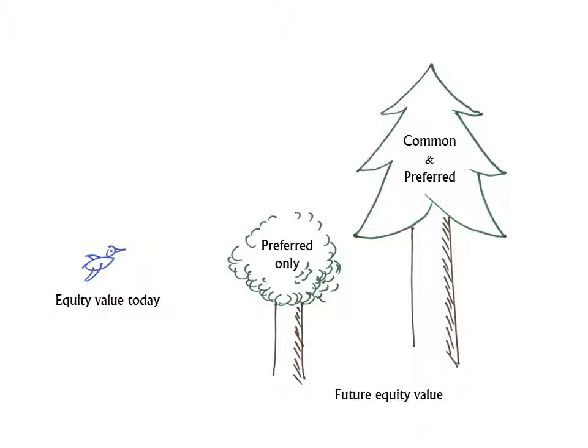The higher tree, the pine, represents a higher value. At the higher value, the equity proceeds are sufficient to pay the common and the preferred. So the question is: where will the bird land? Will it land in the lower tree so that only the preferred has value? Or will it choose the pine, where value is high enough to make payments to the preferred and the common?